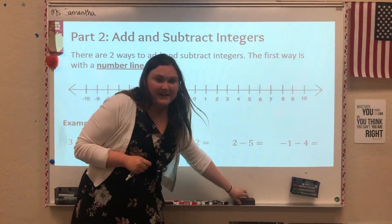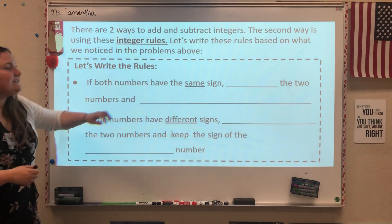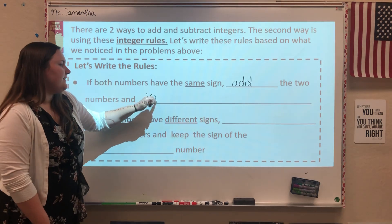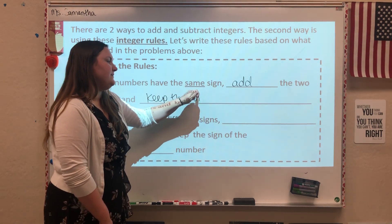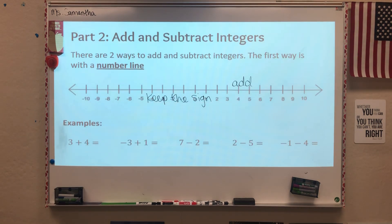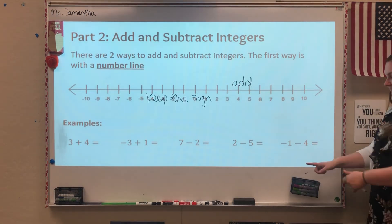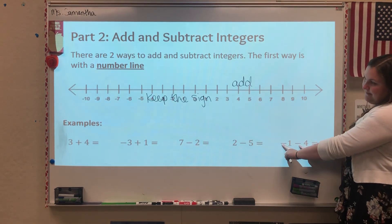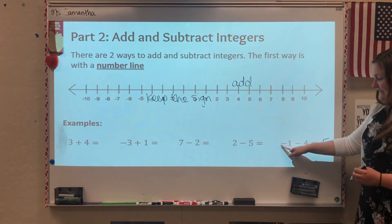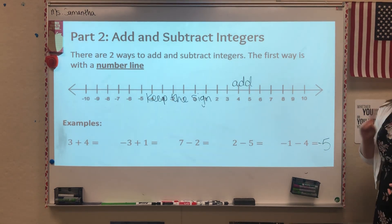The second way to do these is using integer rules. There are two rules. The first one says: if numbers have the same sign, you can add the two numbers and keep the sign. An example using this rule — looking at the problem negative 1 minus 4, those numbers have the same sign; they both have a negative sign in front. So I add 1 and 4 to get 5, then keep the sign negative, giving me negative 5 — the same thing we got before with the number line.